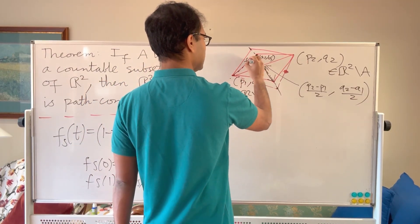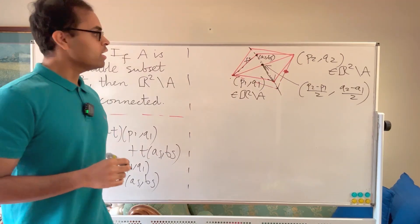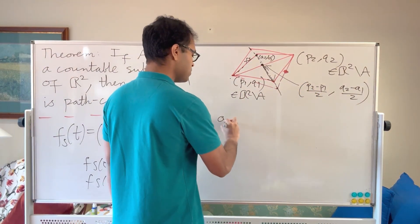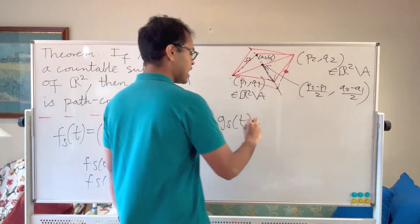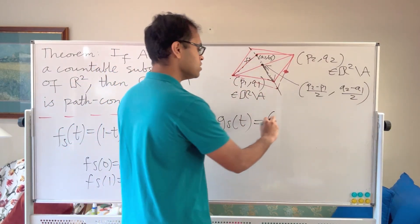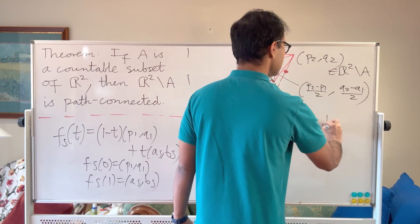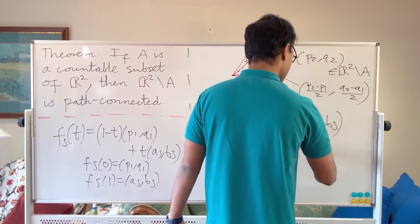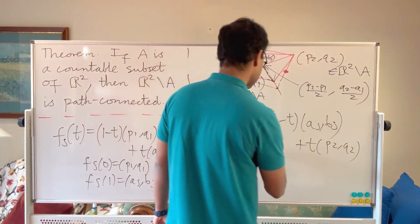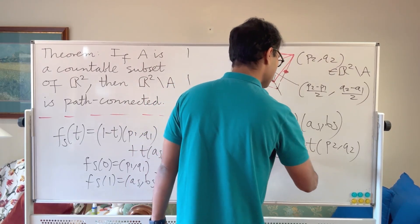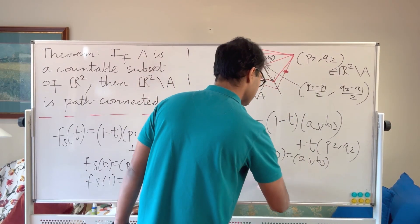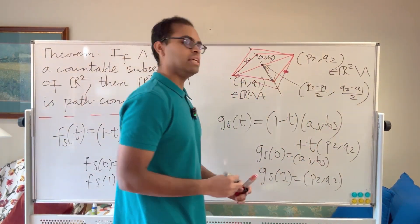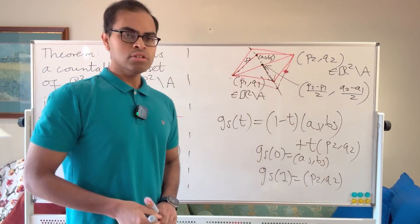Now for the second segment, from (as, bs) to (p2, q2), define: gs(t) = (1 - t)·(as, bs) + t·(p2, q2), where as and bs are defined in terms of p1, p2, q1, q2, and s. We can verify: gs(0) = (as, bs) and gs(1) = (p2, q2). Both fs and gs are continuous — they're linear functions — and you can check their coordinates.